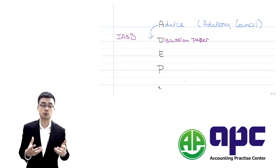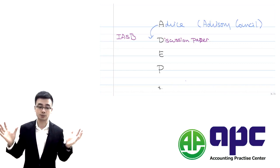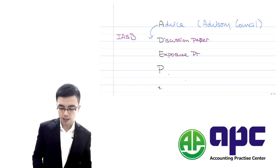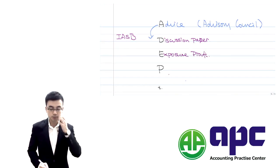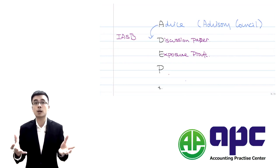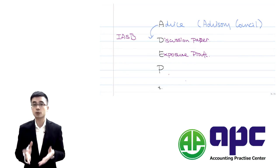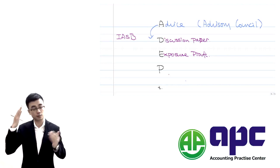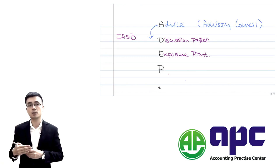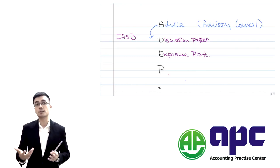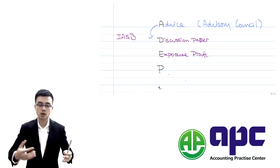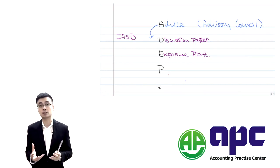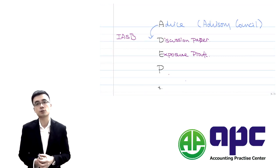From the IASB's point of view, when all published comments from the public are received, they develop something called the Exposure Draft. Based upon the Discussion Paper, they further improve the accounting standards based on those comments. The Exposure Draft is essentially the near-final IFRS 16. The IASB issues the Exposure Draft and again invites public comment to see which areas can be further improved.